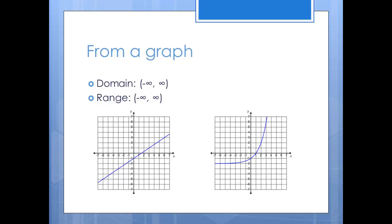Again, for the domain, look along the x-axis. Since the curve will keep going on both the left and right sides, there is a point on the curve for every point on the x-axis. The domain is all real numbers or negative infinity to infinity.